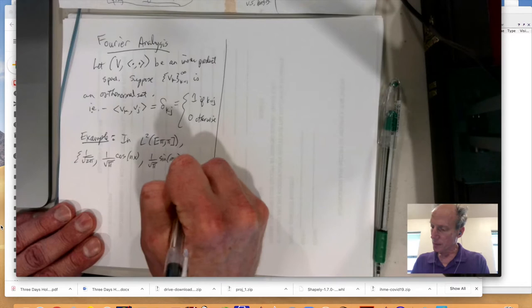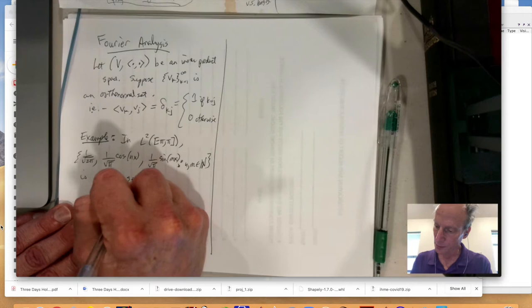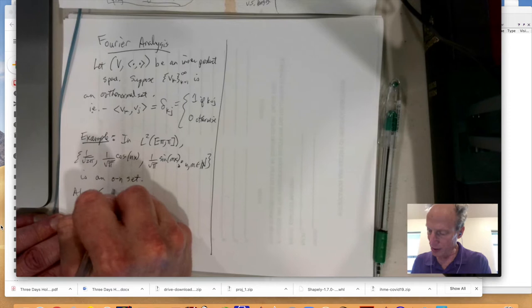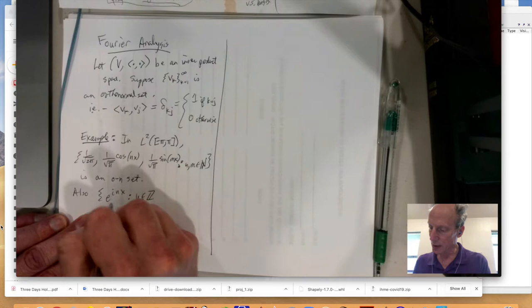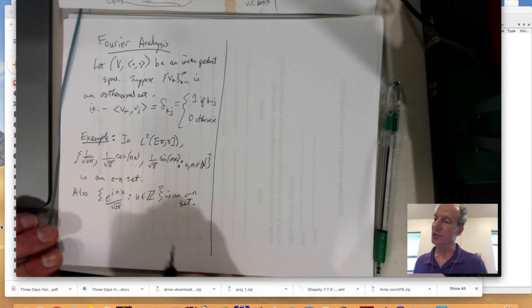So I have these weird constants, 1 over square root of 2 pi, 1 over square root of pi. And the cosines and the sines, that forms an infinite set of functions. This actually is an orthonormal set. Also, you can use the exponentials e to the i n x, such that n is in z. And then I have to divide by square root of 2 pi, is an orthonormal set.